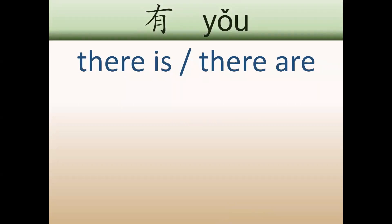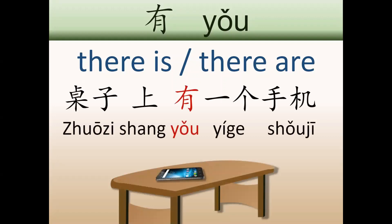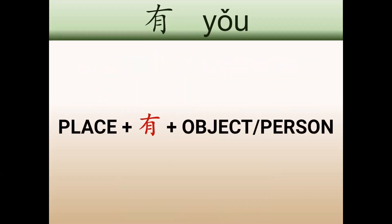Let's see an example. On the table, there is a mobile phone. In English, we would say 'there is a mobile phone on the table,' but please pay attention to the structure: place + yǒu + object or person.